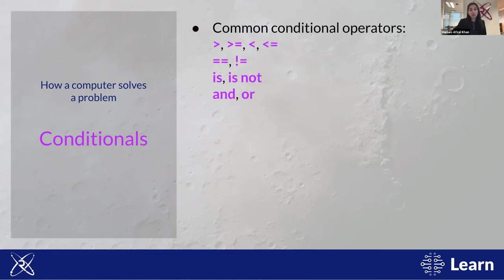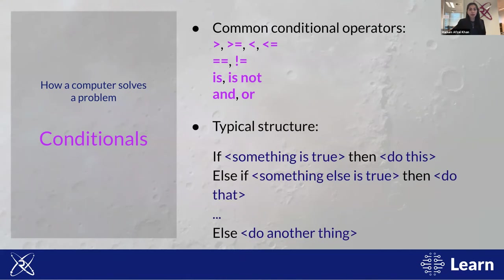You can check for pretty much anything that can be said to be true or false — for example: is this number greater than that number? Does this string exactly equal another string? You can have more complex expressions joined with 'and' or 'or,' such as: is this number greater than that AND less than some third number? The typical structure is: if something is true, do this; else if something else is true, do that; and else do another thing if none of the earlier conditions are true — that last else branch is a catch-all.